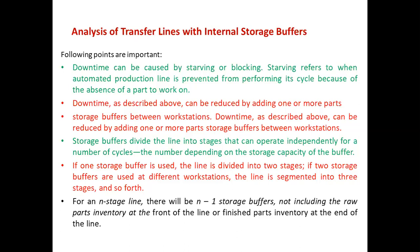To summarize: one storage buffer divides the line into two stages; two storage buffers yield three stages, and so forth. For an n-stage line there are n minus one storage buffers. The raw material input and the finished part output inventories at the ends of the line are not considered in the analysis of transfer line efficiency or performance.